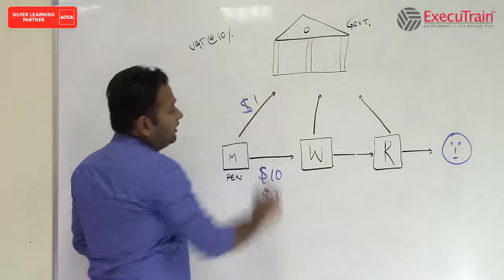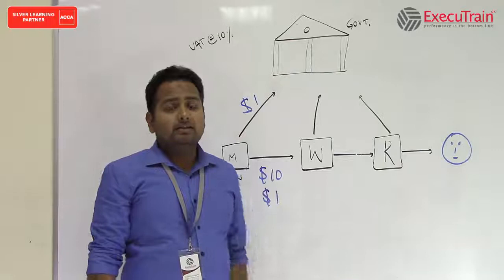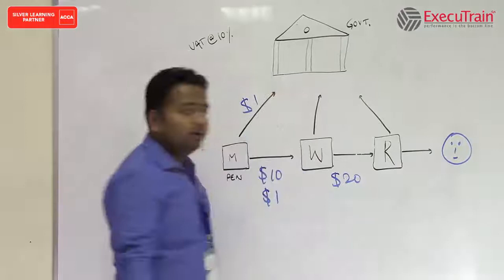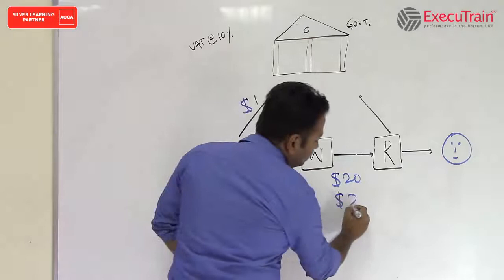Now this wholesaler will resell it to the retailer. Obviously when he sells this, he will add some profit to it. So suppose if we take an example that this guy sells the pens at $20. Now the VAT again comes out to be at the rate of 10%, which is $2.